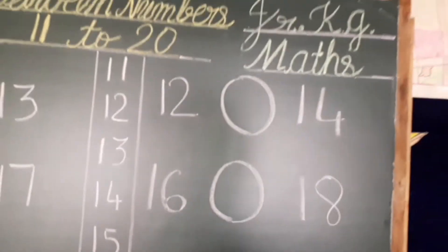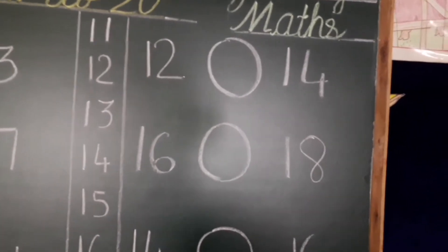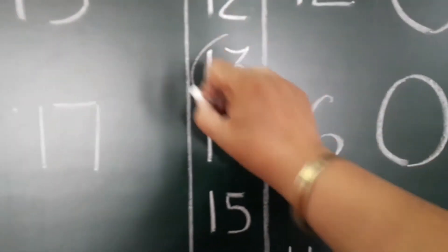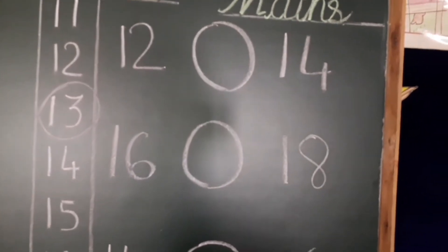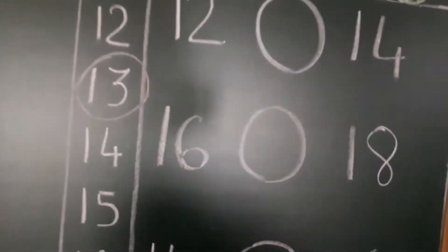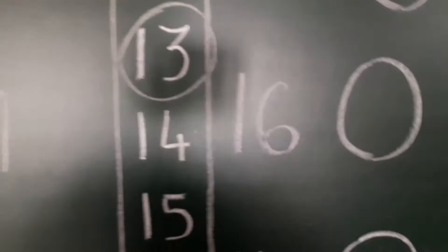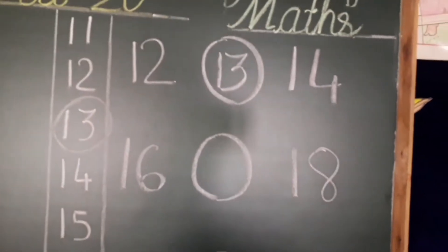Next: 12 dash 14. 12 dash 14 ke beech mein jo number hai — which number is between 12 and 14? 13. So you write here 13.